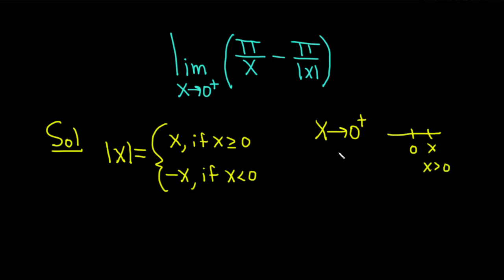In this particular problem, the absolute value of x is just equal to x. So now we can rewrite our limit. We have the limit as x approaches 0 from the right, parentheses pi over x minus, and then this is also pi over x, because we know that the absolute value of x is equal to x.